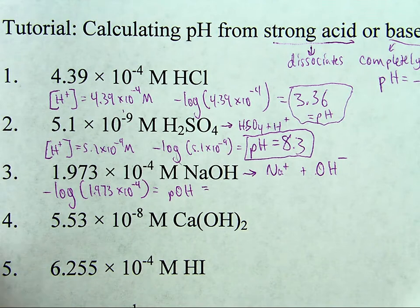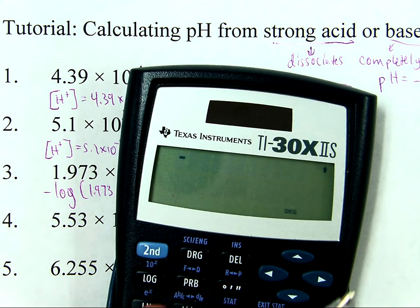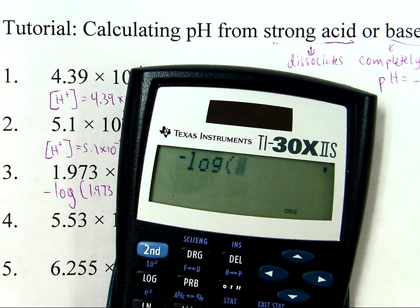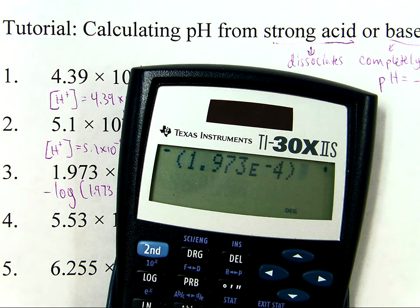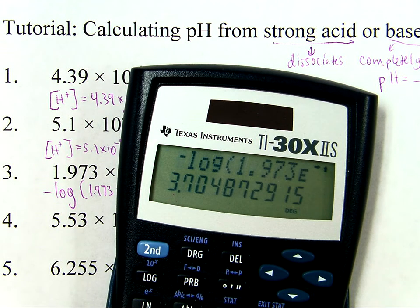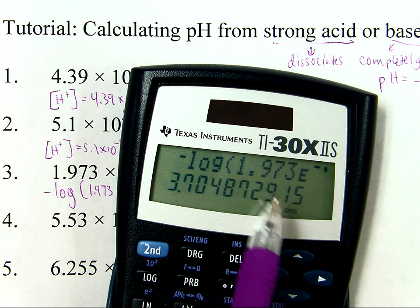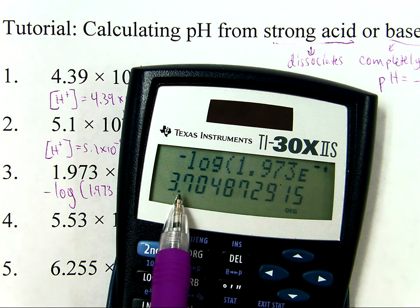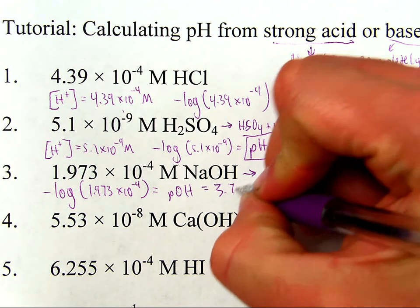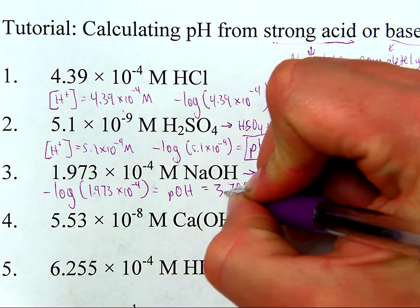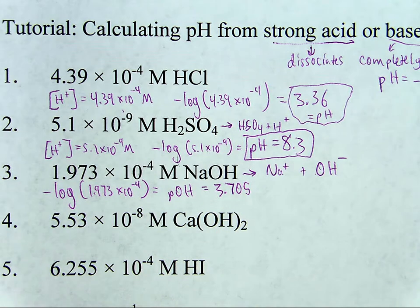However, if this is hydroxide, then the negative log of this will give not pH but pOH. So negative log of 1.973 times 10 to the negative fourth equals pOH because this is from hydroxide ion. And let's see what that comes out to. Negative log of 1.973 times 10 to the negative fourth. 3.705.